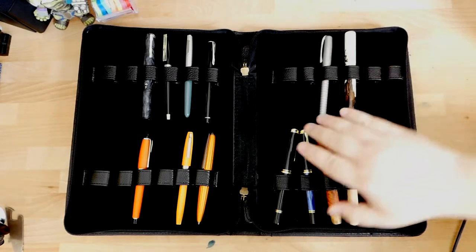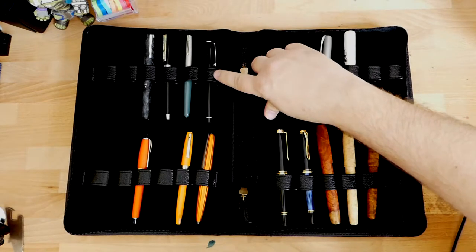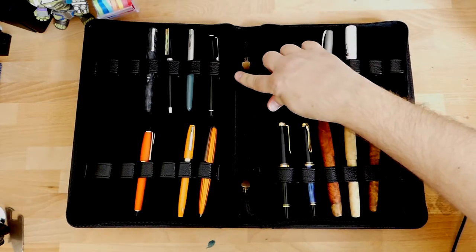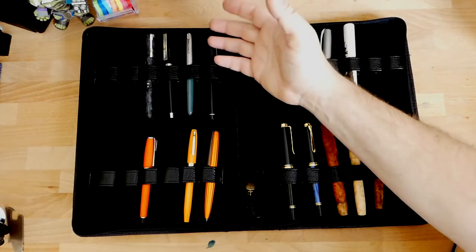You can see this does have two rows, top and bottom, of these little loops. These loops are actually double loops. When I think of double loops on a binder like this, I think of one top and one bottom each row. And actually, truth be told, I prefer that because it keeps your pens from wiggling around.